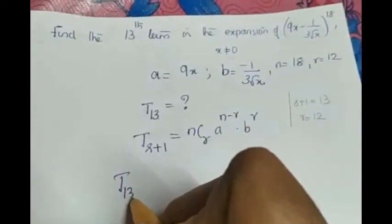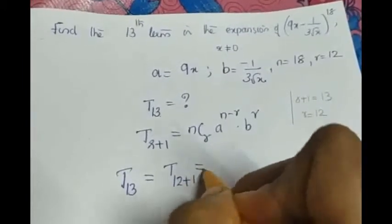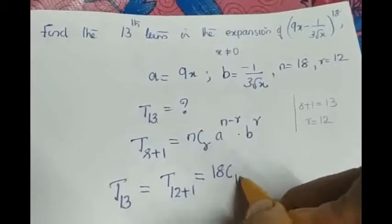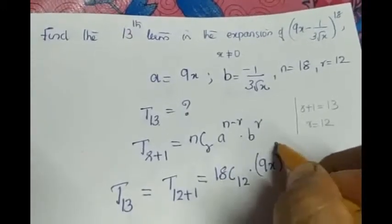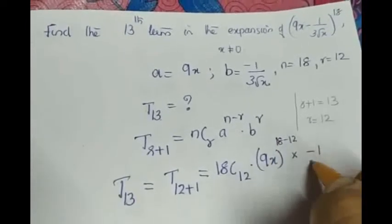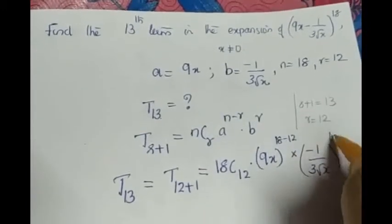So 13th term T_13 is equal to T_{12+1} which is equal to nCr. What is n? 18C12 into what is a? (9x)^(18-12) into b. b is (-1/(3√x))^12.